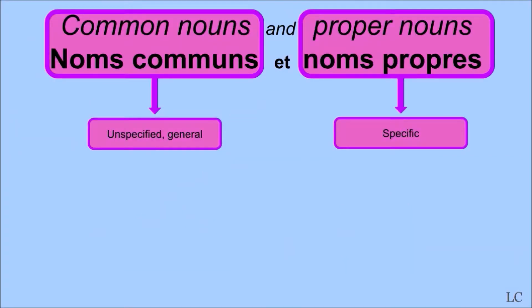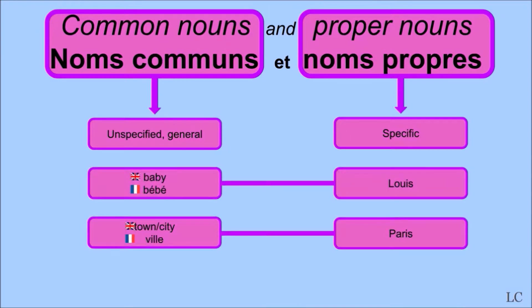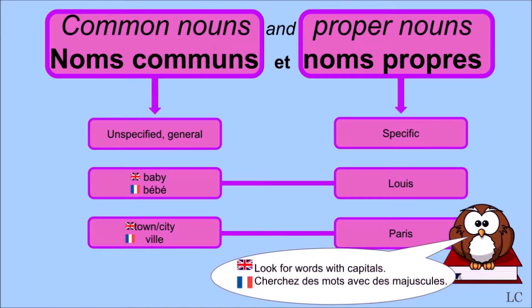The first category is common nouns, nom commun, which refer to unspecified general nouns, and proper nouns, nom propres, which refer to specific nouns. For example, bébé and ville are common nouns, while Louis and Paris are proper nouns. You can differentiate them by capitalization.